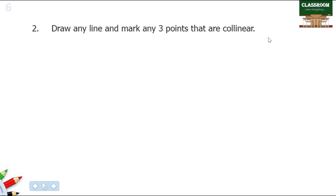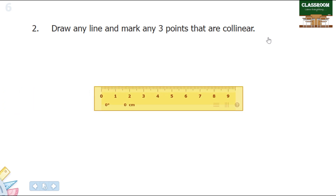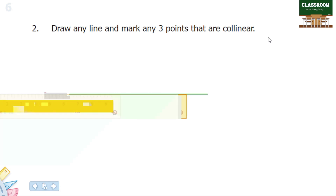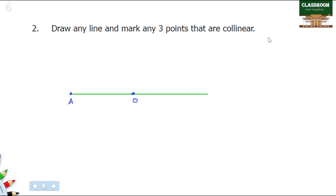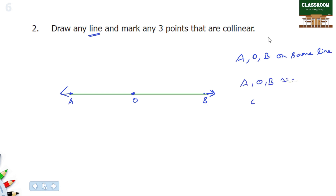Draw any line and mark any three points that are collinear. So what we do is drop a line and create collinear points. We create three points — A, O, B on the same line. So A, O, B are collinear points.